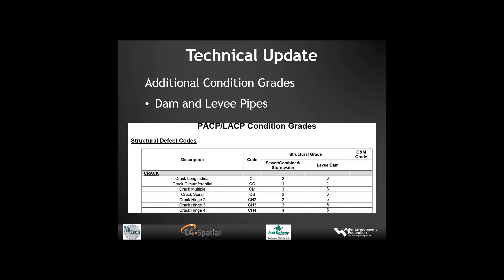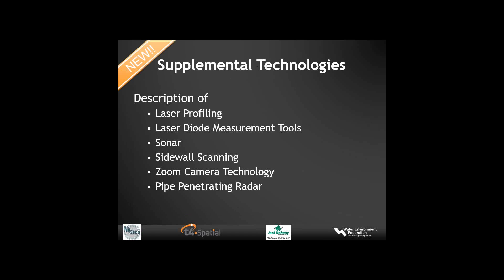In the dams and levees portion, the U.S. Army Corps of Engineers actually adopted PACP for their dam and levee inspections, so additional condition grades were added for those inspections. Some of the new items include new supplemental technologies added to the header form and database—such as laser profiling, laser dial measurement tools, sonar for measuring sediment quantity in a pipeline, side-wall scanning, zoom camera technology, and pipe-penetrating radar (PPR), which is becoming more widely used to locate voids beyond the pipe. The header form now includes ten optional custom fields, for a total of 54 fields that include quality control fields and GIS fields, allowing the database to be more complete and linkable to GIS.